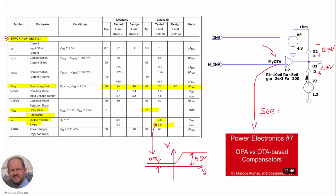We are also implementing limiting values for the output, which come from the output voltage swing parameter in the datasheet: between 0.5 volts and 5.5 volts. We do this using voltage sources and two diodes. Considering the diode forward voltage is around 0.7V, we use 4.8 volts for the upper source — since 4.8 plus 0.7 equals 5.5 — and 1.2 volts for the lower source, since 1.2 minus 0.7 equals 0.5 volts.